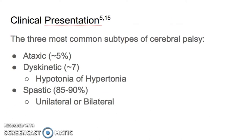Cerebral palsy is a non-progressive brain injury that generally presents with slow motor development, hypertonicity, and loss of motor control that can result in involuntary motions. The three major subtypes of cerebral palsy are ataxic, dyskinetic, and spastic.